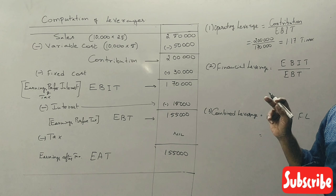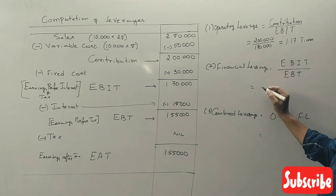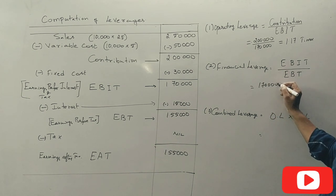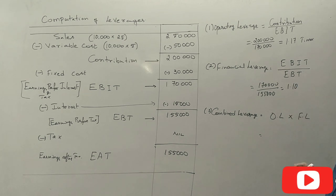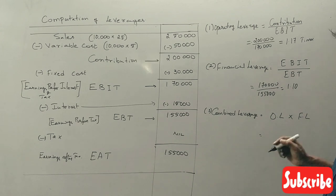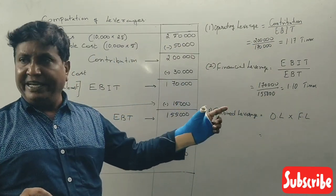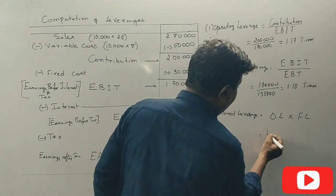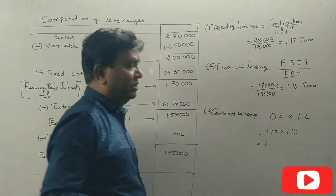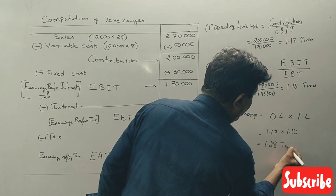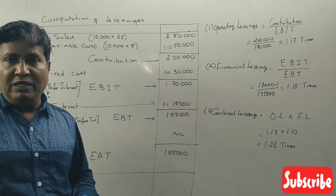Financial leverage: EBIT one lakh seventy thousand divided by EBT one lakh fifty-five thousand equals 1.10 times. Summary: Operating leverage is 1.17, financial leverage is 1.10, combined leverage is 1.28 times. Five to six marks.